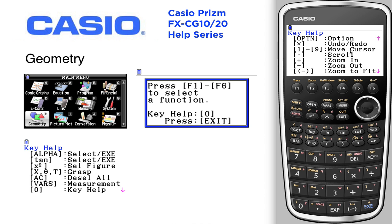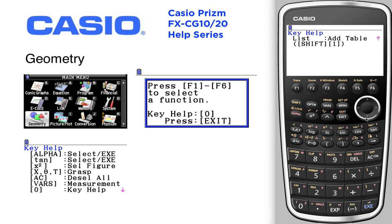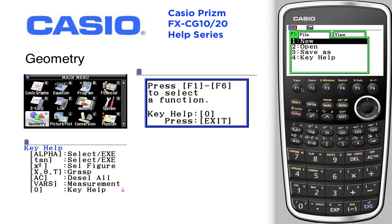1 through 9 move the cursor — we'll take a look at that in a second. Scroll zooms in and out, and then shift. The other ones are the function keys, so we'll exit here and press function.